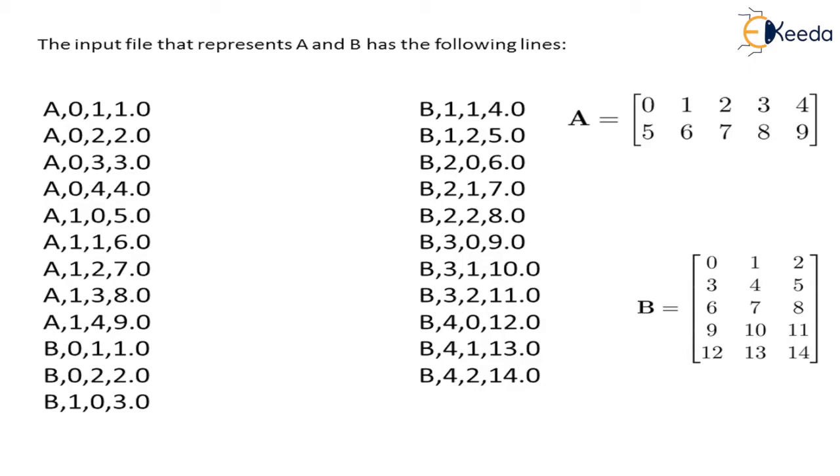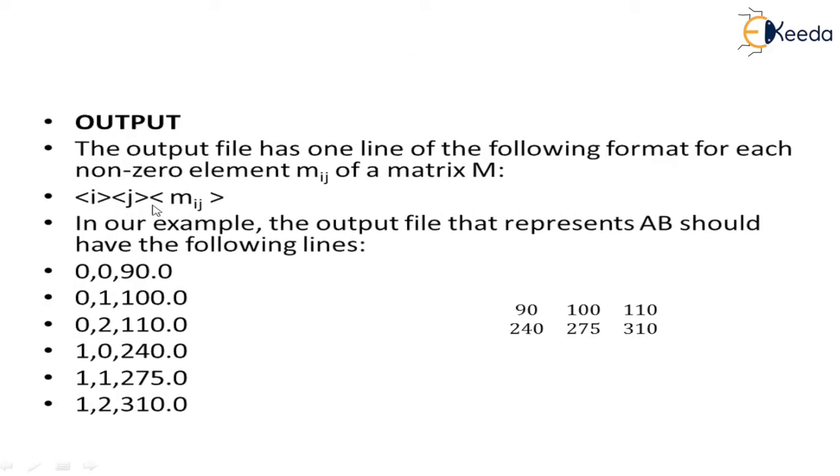Now we should understand what kind of output file format should be there: I and J, the position of the element inside the matrix in output format, and M(I,J), the element. This is the output of multiplication between those two matrices. We get position 0,0, so we write 0,0,90.0. The next element is 100, so we write 0,1,100.